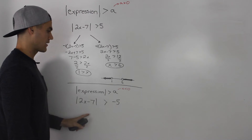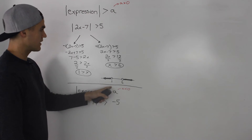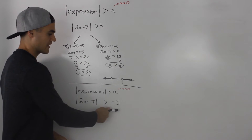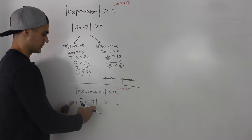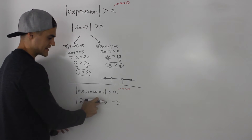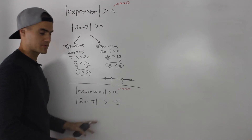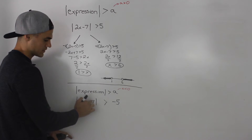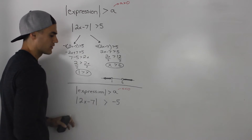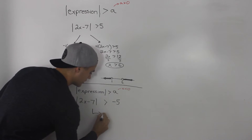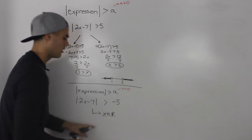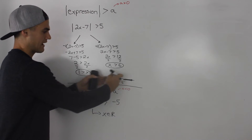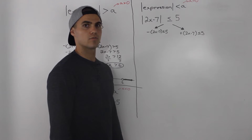What if you had a greater than absolute value inequality but a was negative — for example, when is the absolute value of 2x minus 7 greater than negative 5? An absolute value is always positive, so it will always be greater than negative 5 no matter what x value you use. Even if 2x minus 7 is negative, it turns positive. So the solution is all real numbers — an infinite amount of solutions. On the number line, everything would be highlighted.